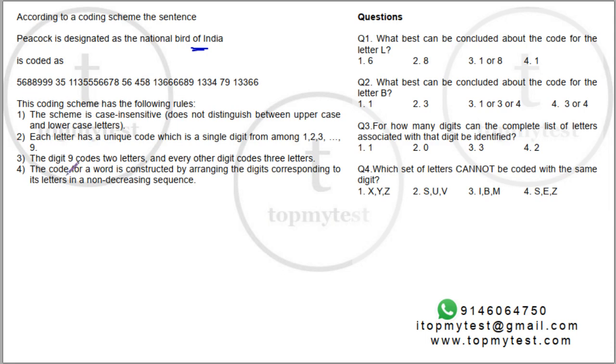The coding scheme has the following rules. It is case insensitive, which means whether you have capital I or small i, capital J or small j, it will be the same code. Each letter has a unique code which is a single digit from 1 to 9. Given that there are 26 alphabets and there are only 9 digits, digits will be repeated.